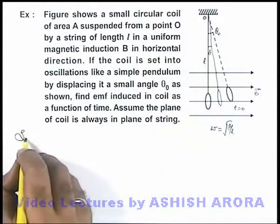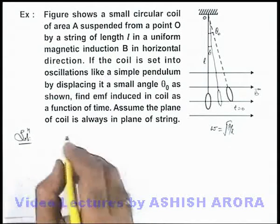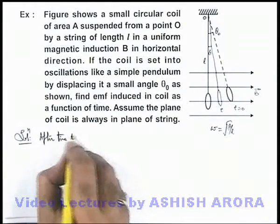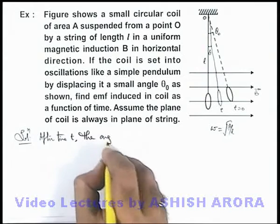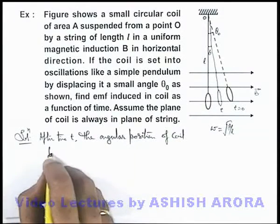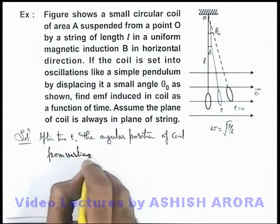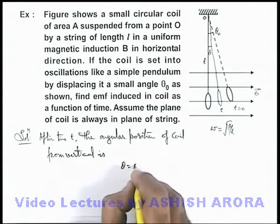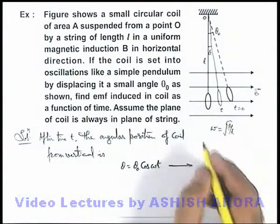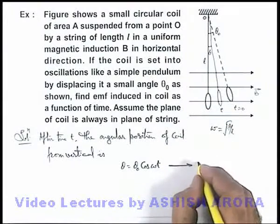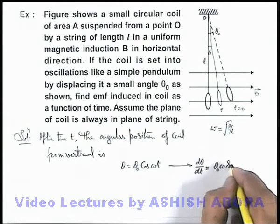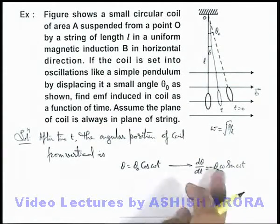This angle θ can be written directly using the SHM equation. After time t, the angular position of the coil from the vertical is θ = θ₀·cos(ωt). From this expression we can also find the angular speed dθ/dt, which is given as -θ₀·ω·sin(ωt). The negative sign indicates that the coil is coming toward the mean position, giving us the direction.